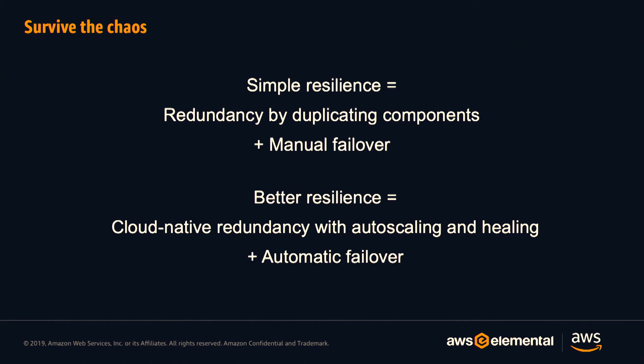This leads into chaos engineering, which Netflix made famous and open-sourced. The idea is that you maintain a steady state — from a live streaming point of view, that means your audiences continue to be able to watch your live output regardless of any disruptions within the architecture or workflow. If components or network connections are failing but your audiences can carry on watching, you've developed an architecture that is essentially chaos monkey-proof.